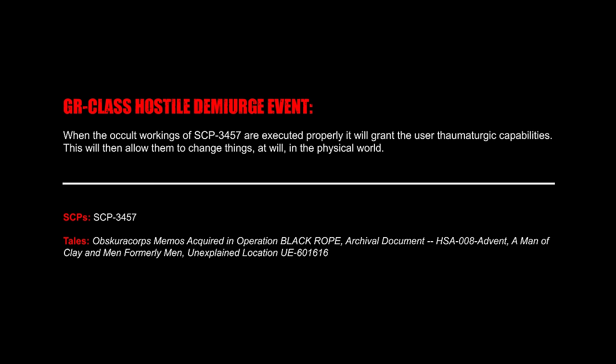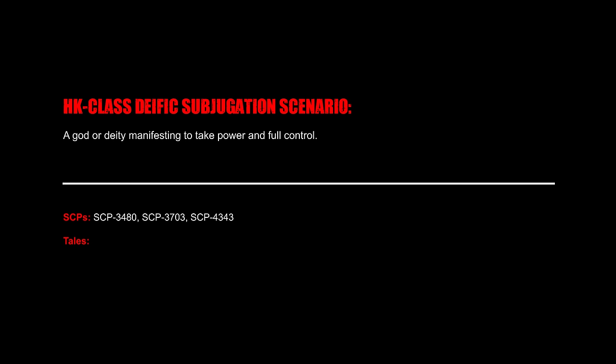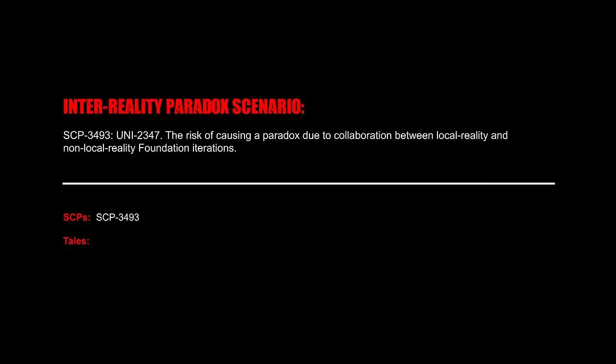Gibble Class Mass Dementia Scenario: SCP-3493-UNI-2049 — the result of a massive black hole increasing in size by an unknown factor. HK Class Deithic Subjugation Scenario: A god or deity manifesting to take power and full control. IK Class Collapse of Global Civilization Scenario: The collapse of human civilization. Interreality Paradox Scenario: SCP-3493-UNI-2347 — the risk of causing a paradox due to collaboration between local reality and non-local reality Foundation iterations.